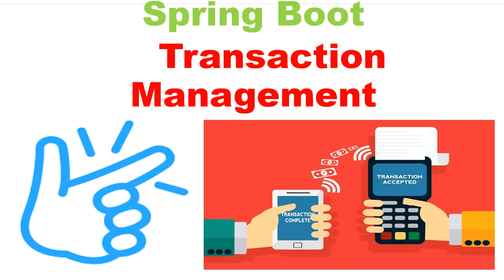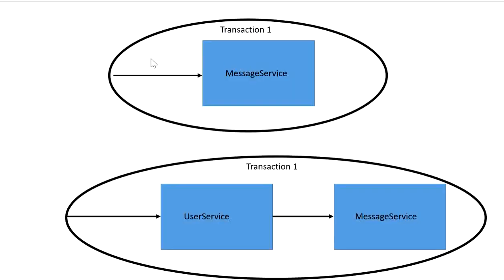A transaction is a unit of work — do everything or nothing. For example, if we are performing two operations in a single transaction — saving user details and saving message details into the database — and the message service fails after the user save, then everything will be rolled back. Without a transaction, the user information would be saved but the message detail would not.